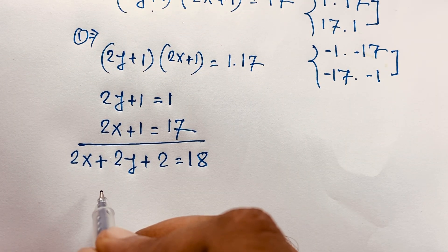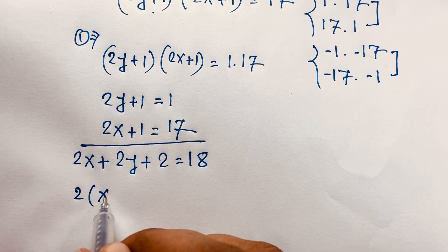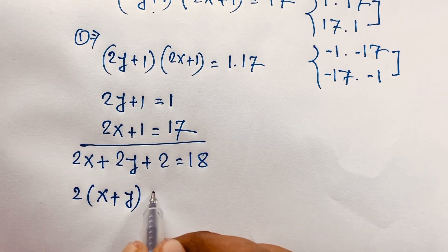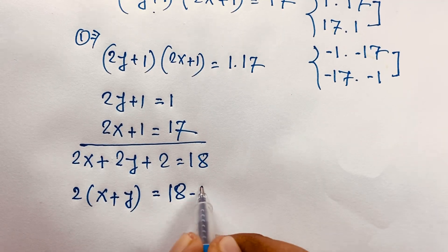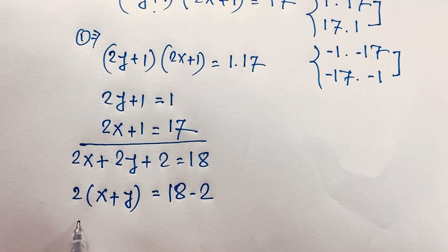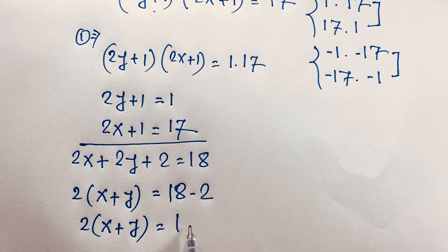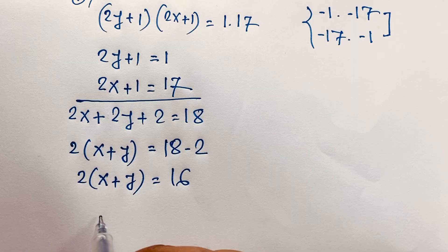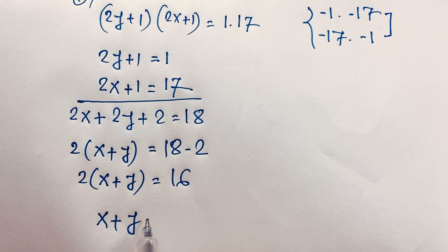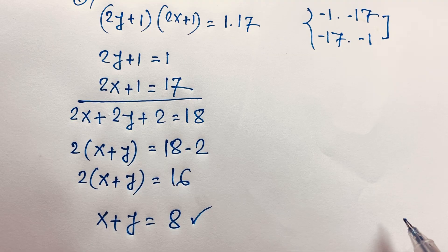Now you can see easily here, 2 is common, so it will be x plus y. Then if I move the 2 to this side, it will be negative 2, so minus 2. Now that is 2 times (x plus y) is equal to 16. If I divide both sides by 2, we will find out x plus y is equal to 8. So our final answer is x plus y is equal to 8.